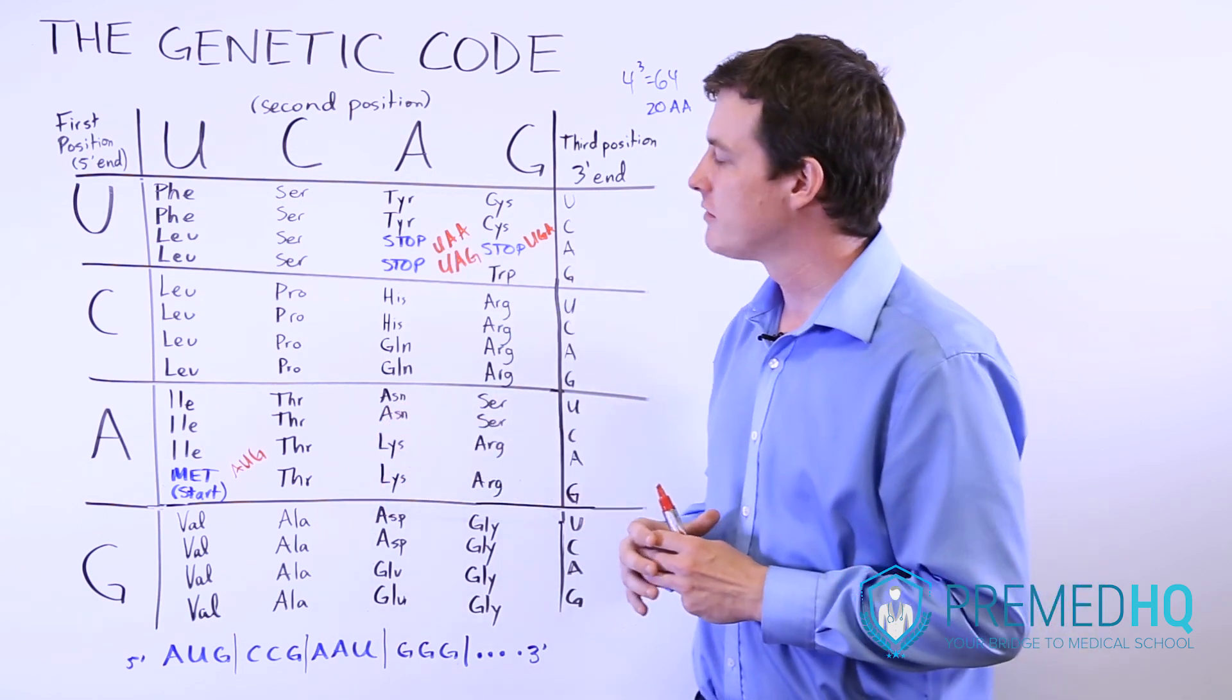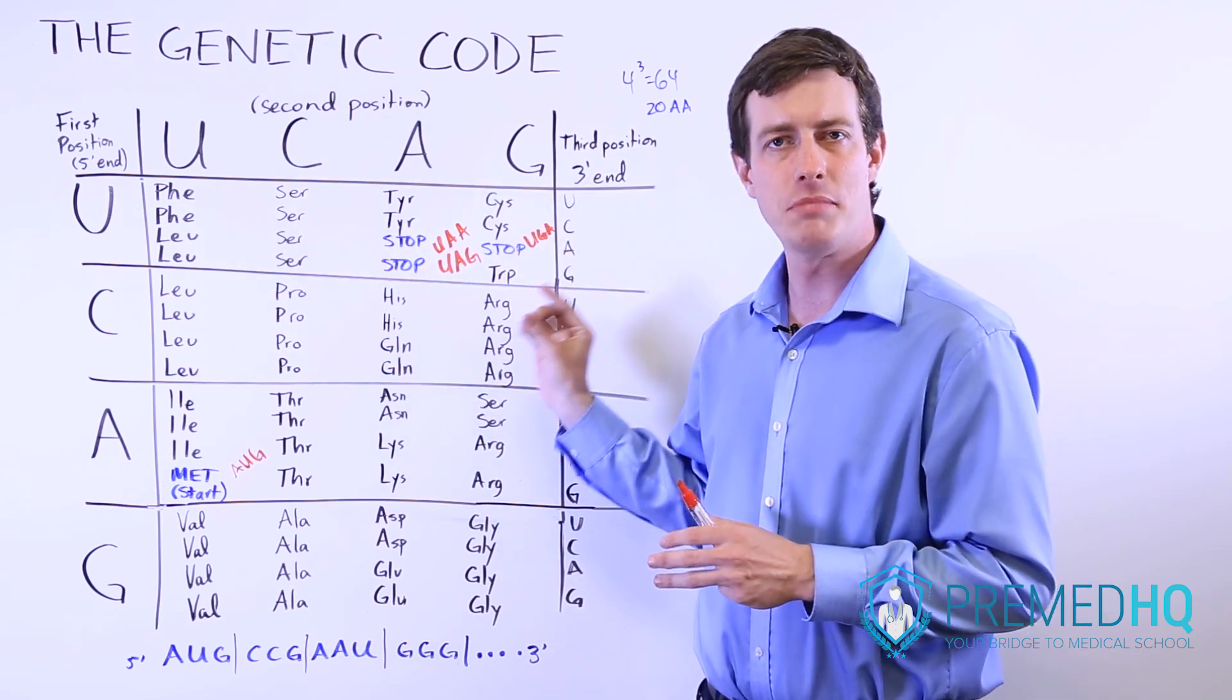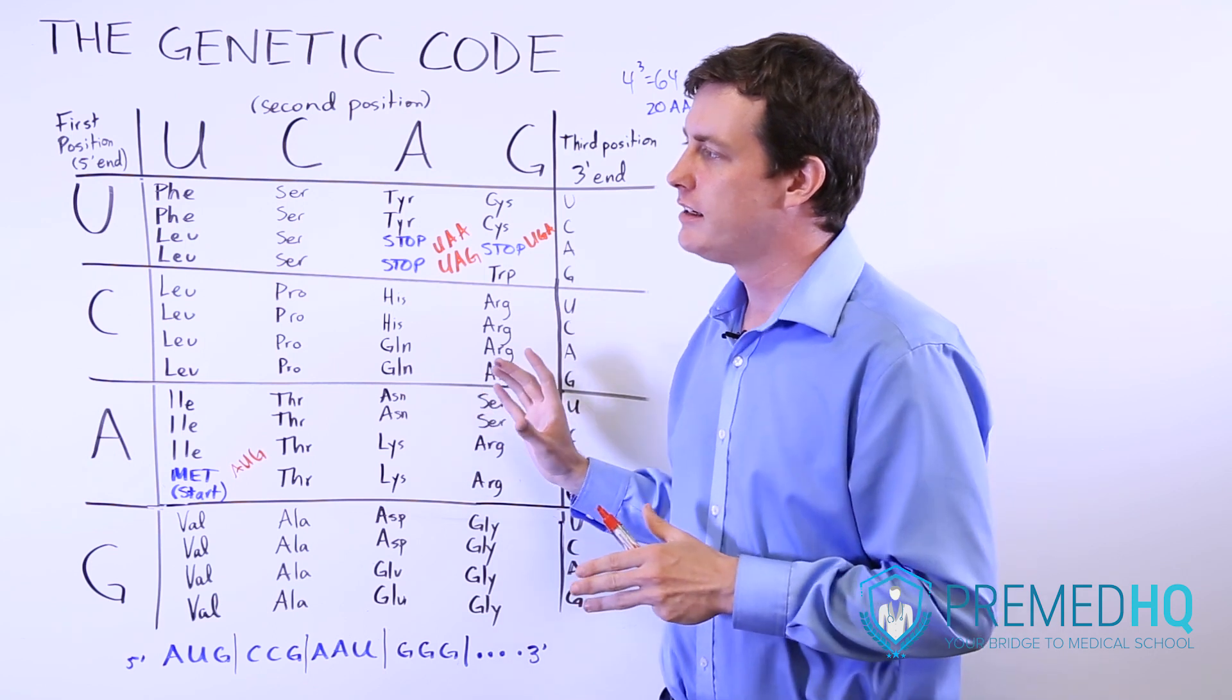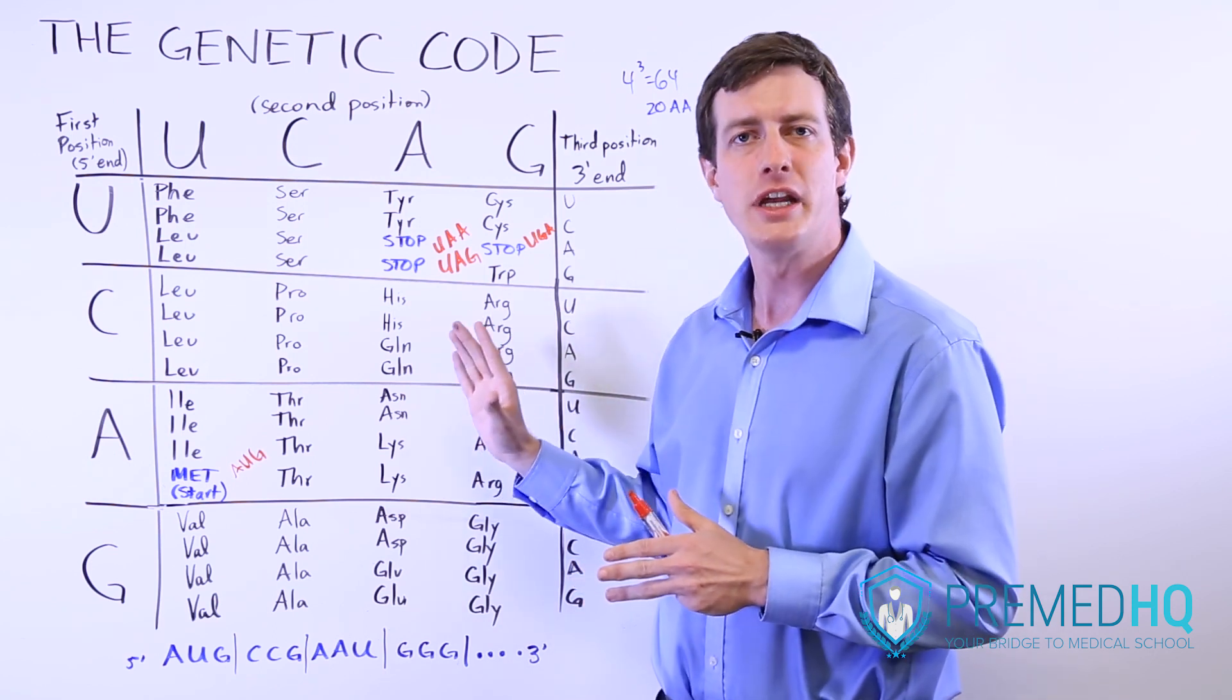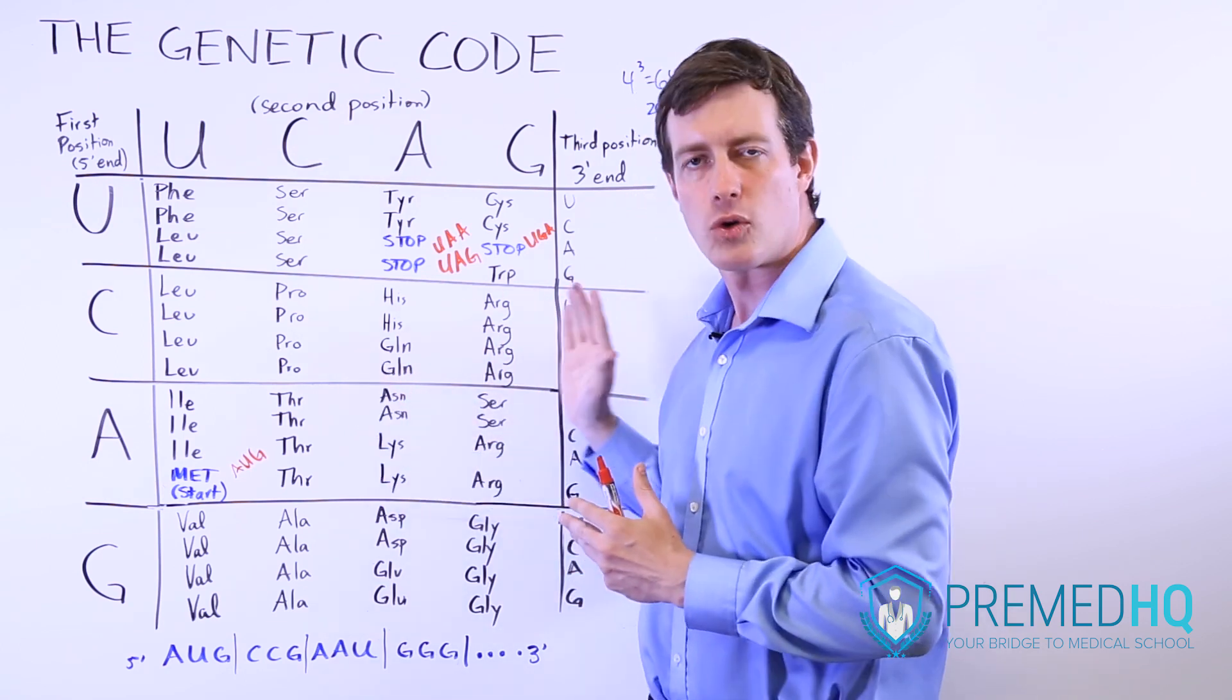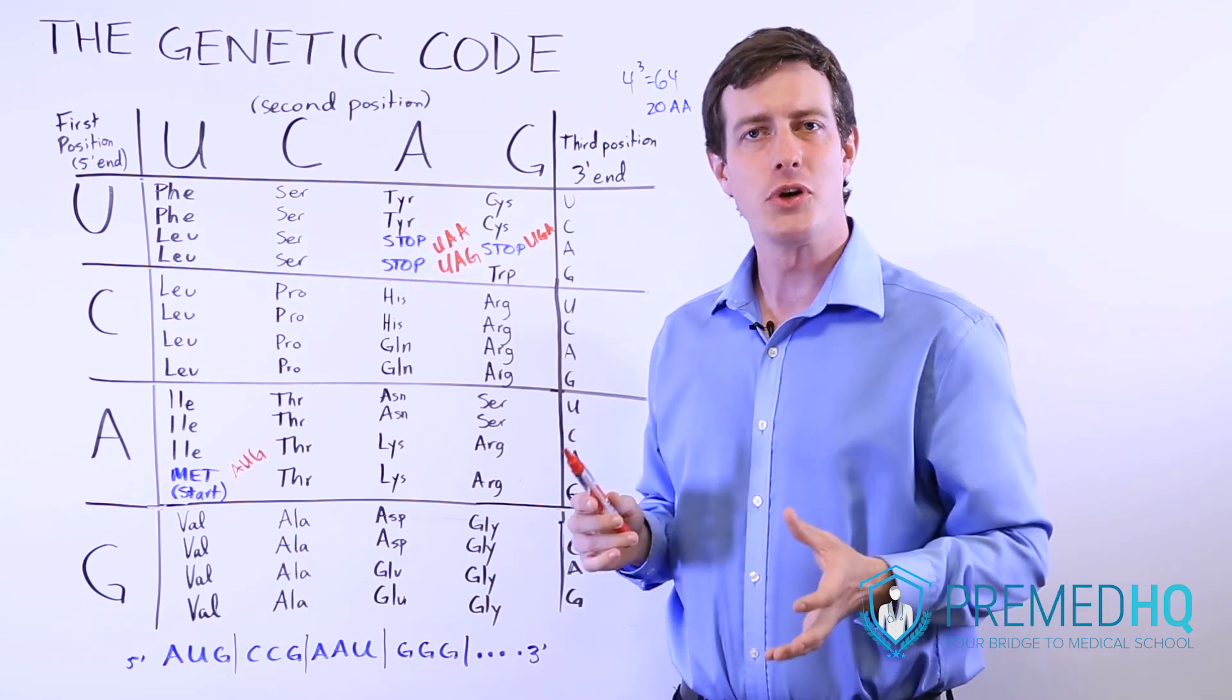There are also frameshift mutations, and frameshift mutations are when you either add or remove bases. And that has an interesting effect because it completely changes the reading frame and pushes the whole chain of nucleotides back or forward. And so we'll start with the discussion of the point mutations.